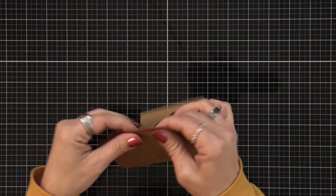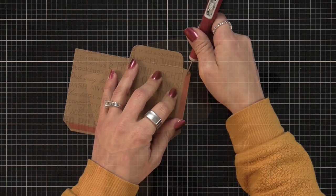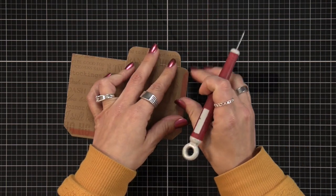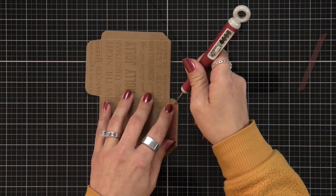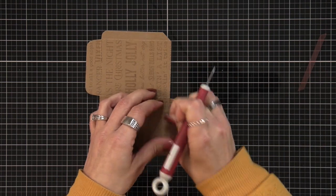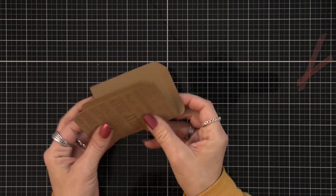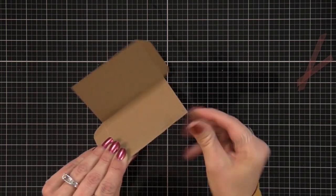Sometimes the backing of that red line tape can be a little tricky to remove so I am using my craft pick to get under it and be able to pull that up to release the backing. Then I'm going to just fold these in, tuck them to the inside, and close this so it seals.